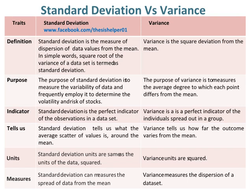Standard deviation can measure the spread of data from the mean. Whereas variance measures the dispersion of a data set.